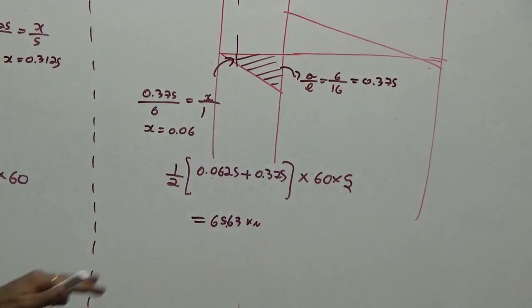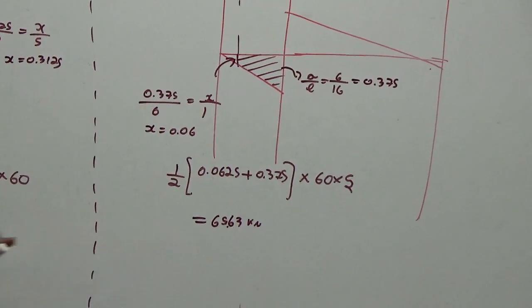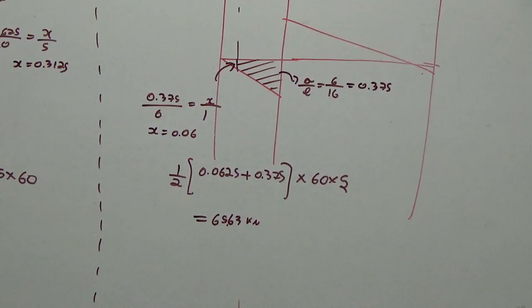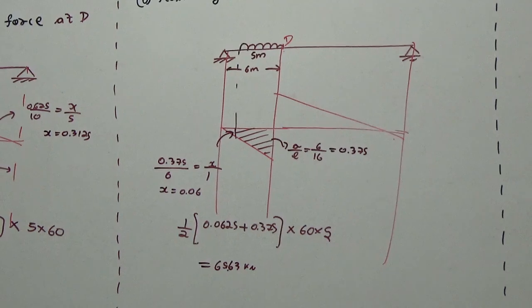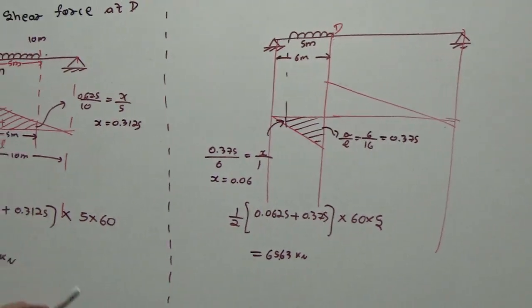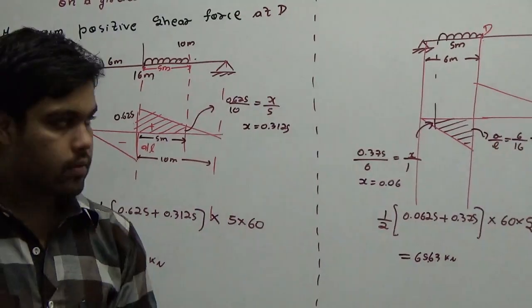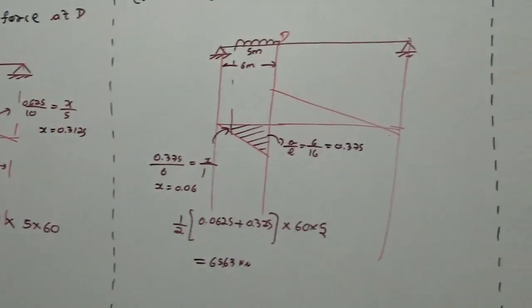So 65.63 kN is the maximum negative shear force and 140.63 kN is the maximum positive shear force at D. That completes shear force. Now let's find the maximum bending moment.